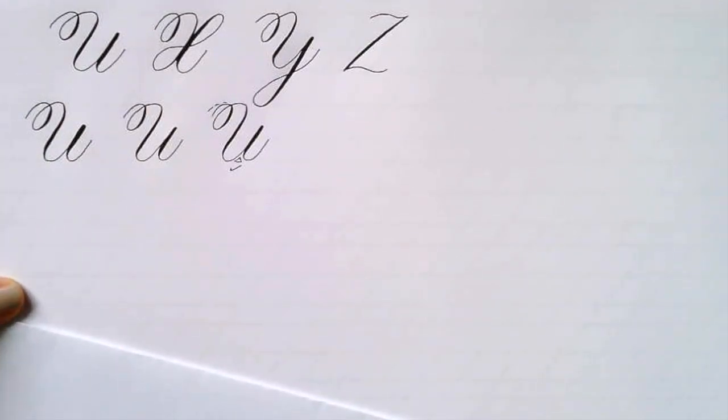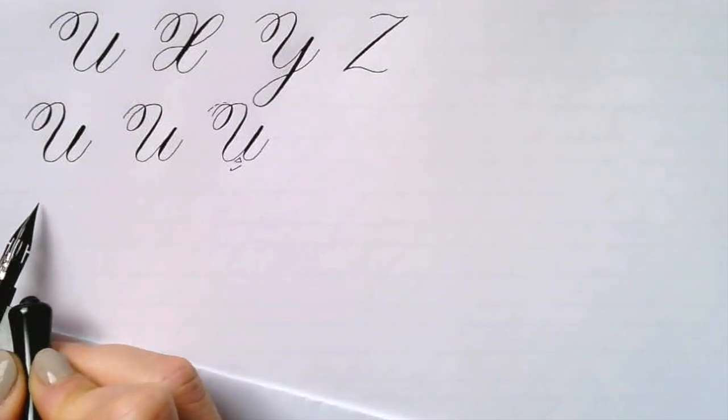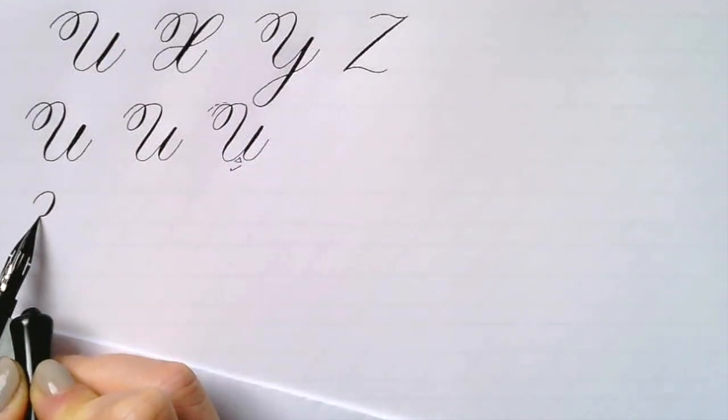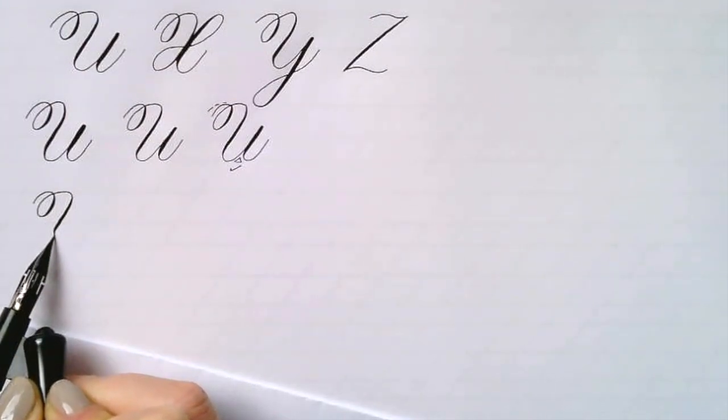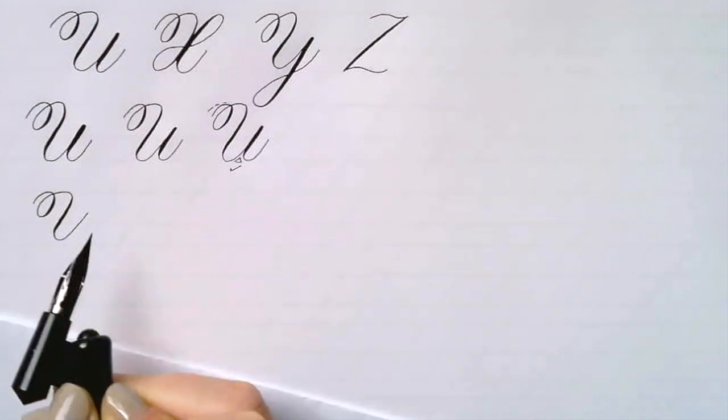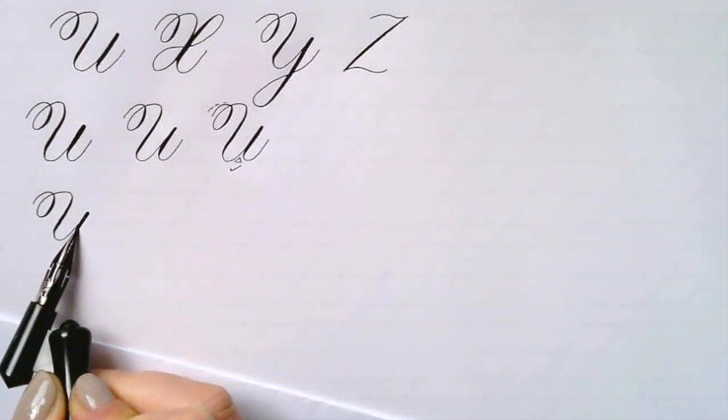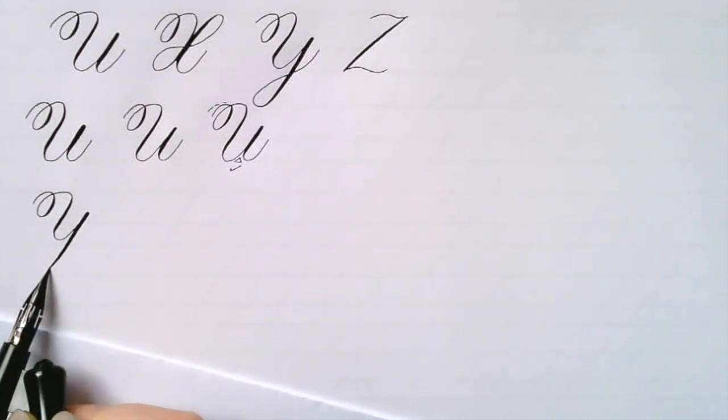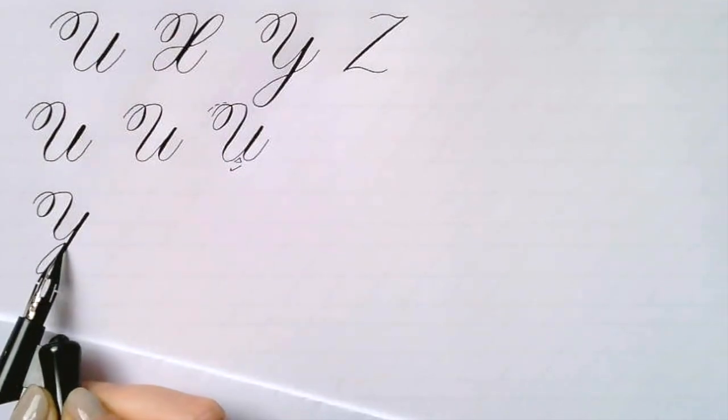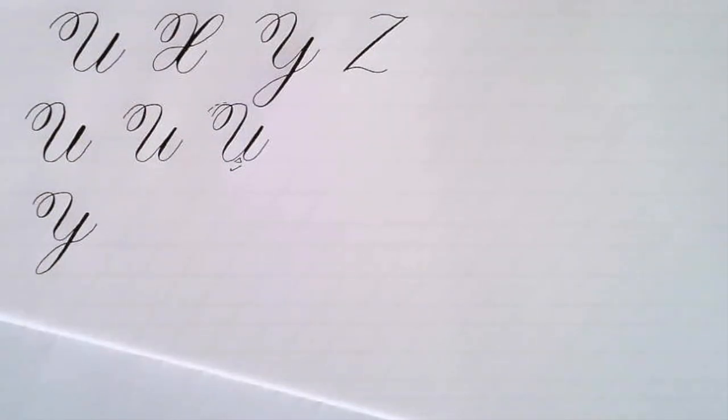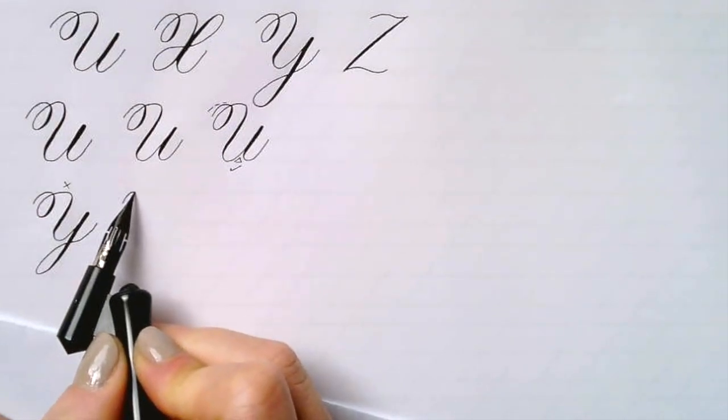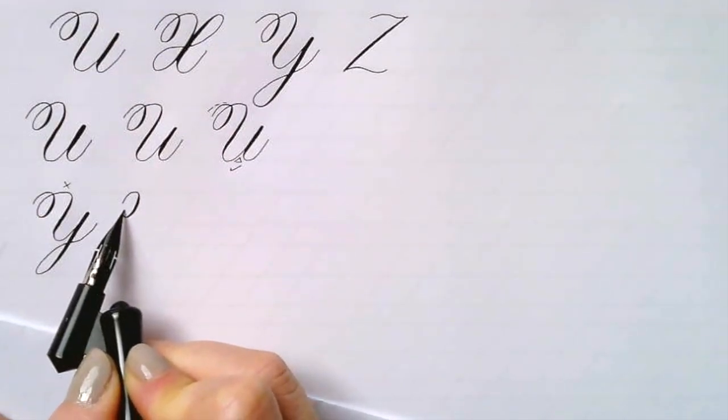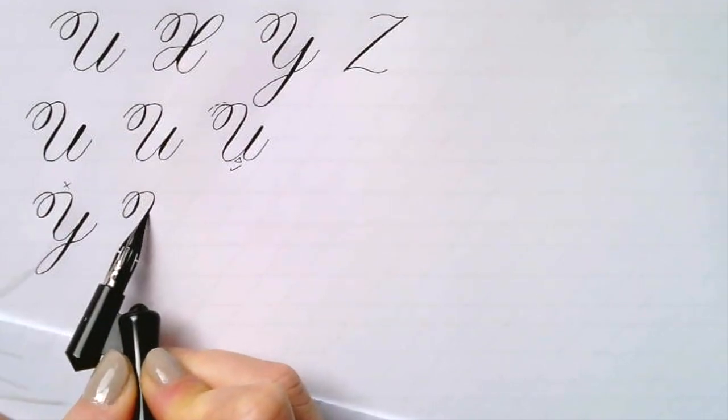I'm going to do the Y next just because they're so similar, because you start like the U basically and then you add the underturned loop which you know by now. And that space again, it's not very even so let me go a little slower. Oh, that's a little larger again.